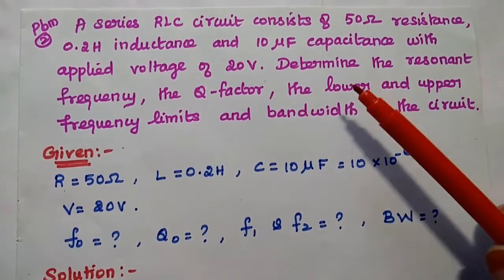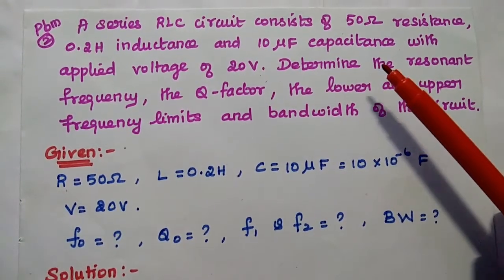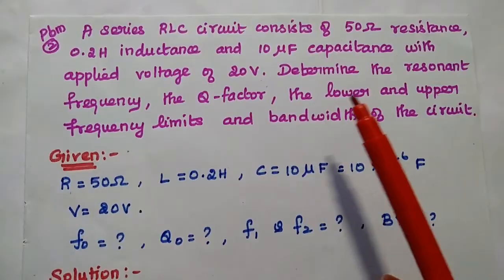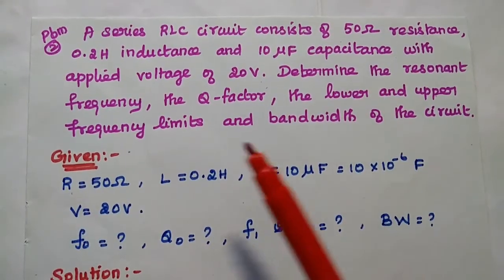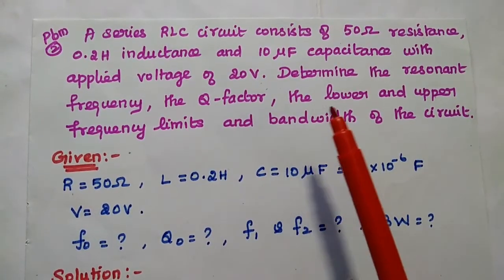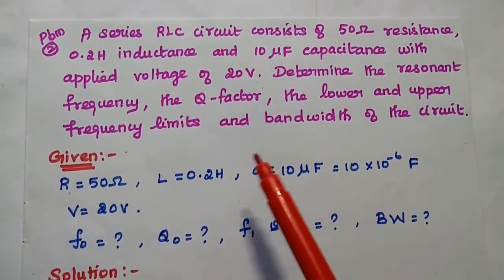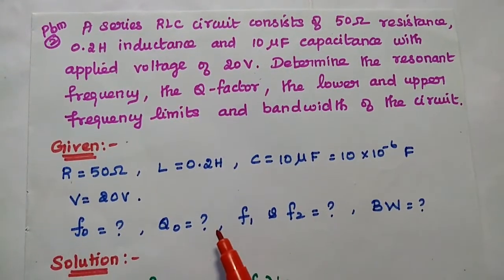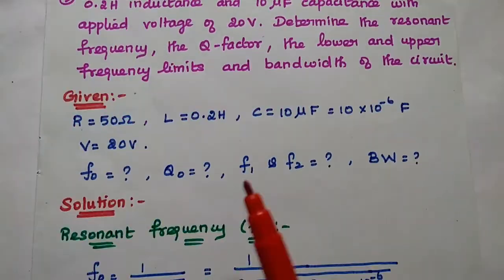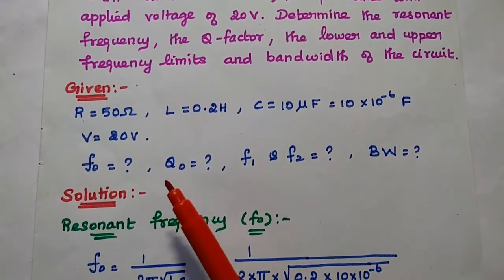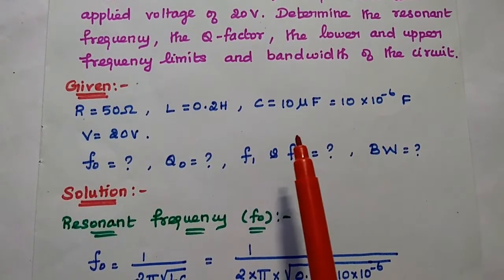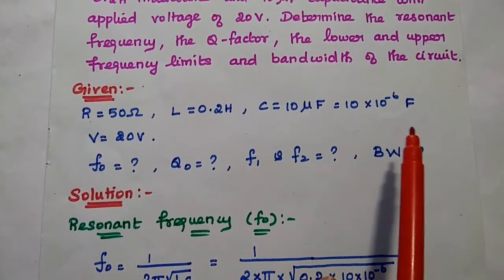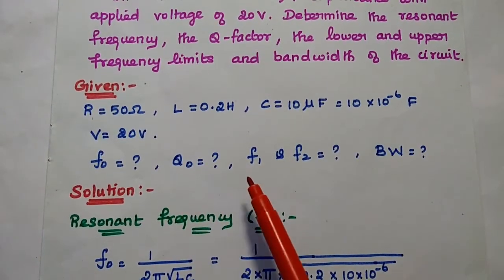The next problem: a series RLC circuit consists of 50 ohm resistance, 0.2 henry inductance and 10 microfarad capacitance with an applied voltage of 20 volt. Determine the resonant frequency, quality factor, the lower and upper frequency limits, and bandwidth of the circuit. Given data: R equal to 50 ohm, L equal to 0.2 henry, C equal to 10 microfarad (10 into 10 to the power minus 6), and V equal to 20 volt.